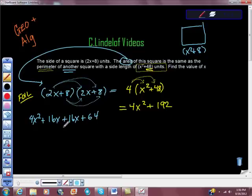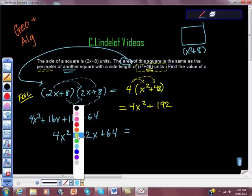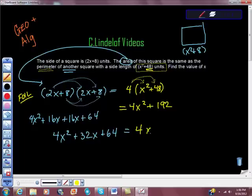I'm going to simplify this a little bit. I'm going to get this to be 4x squared plus 32x plus 64 is equal to this other side, which we already did. Our right-hand side was 4x squared plus 192. I'm just bringing it down as I do my algebra here. Remember, find the value of x.